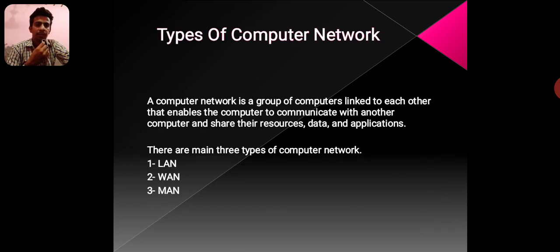Types of Computer Networks. A computer network is a group of computers linked to each other that enables computers to communicate with one another and share resources, data, and applications. There are three main types of computer networks: number one, LAN; number two, WAN; number three, MAN.